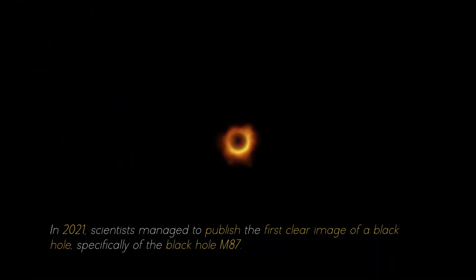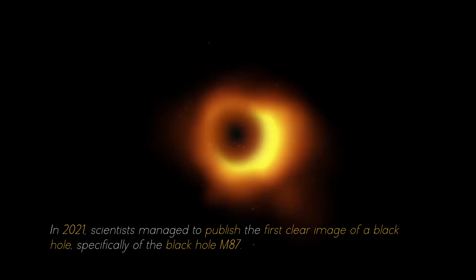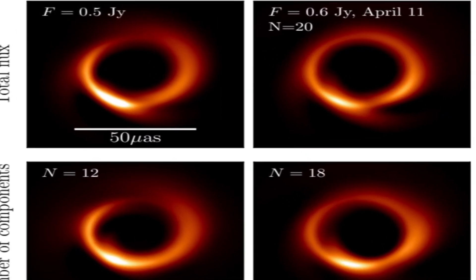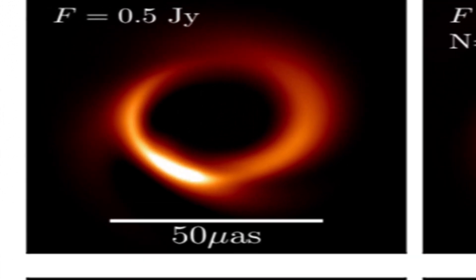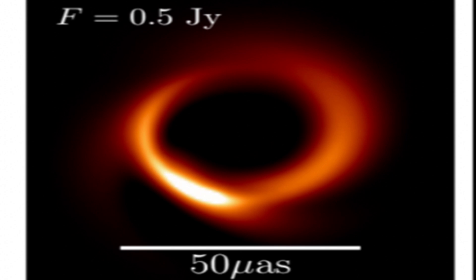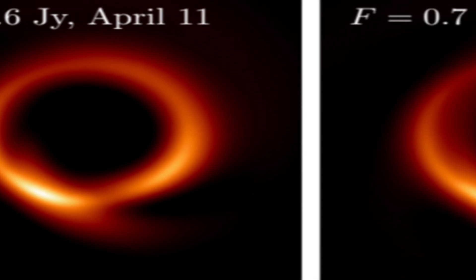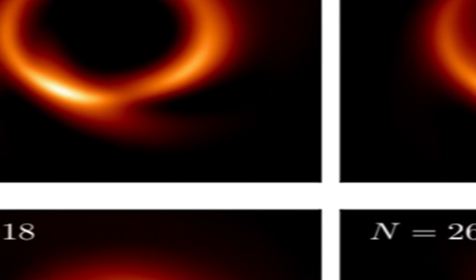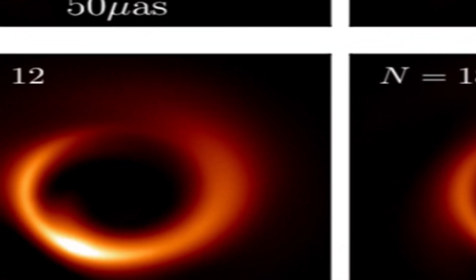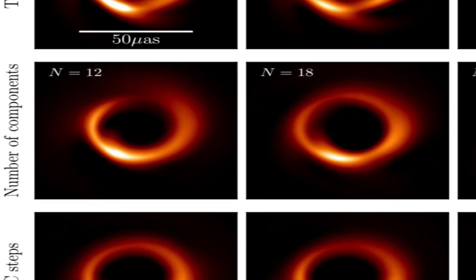In 2021, scientists managed to publish the first clear image of a black hole, specifically of the black hole M87. For several consecutive nights, photographs of the black hole were taken, and with each image researchers collected more evidence about it. In this way, the scientists discovered that black holes are not just simply an empty hole in the void, as many people believed. In reality, they are much more complex.